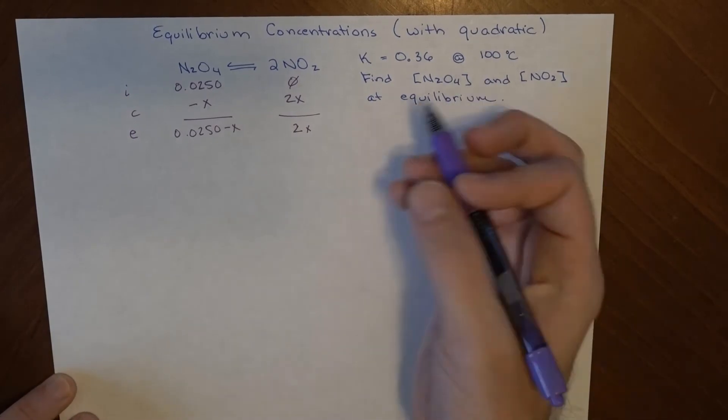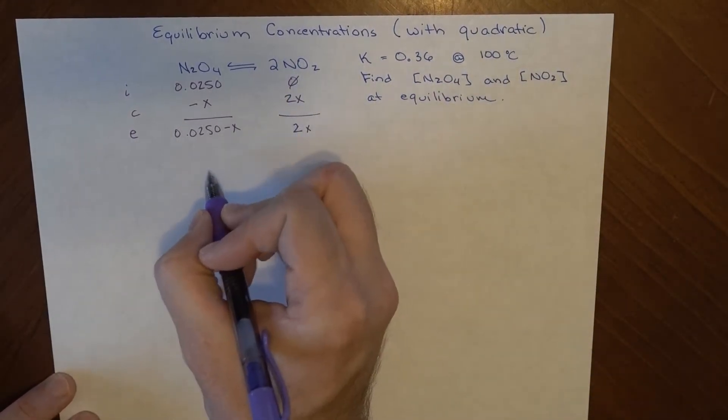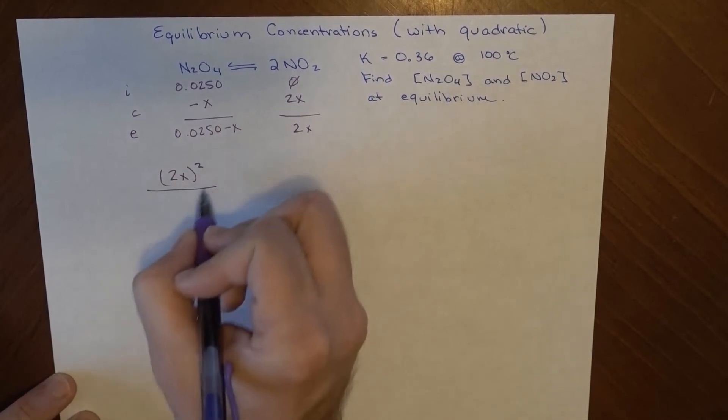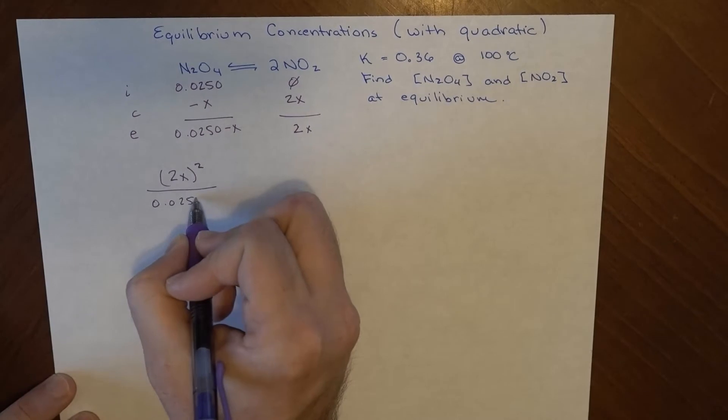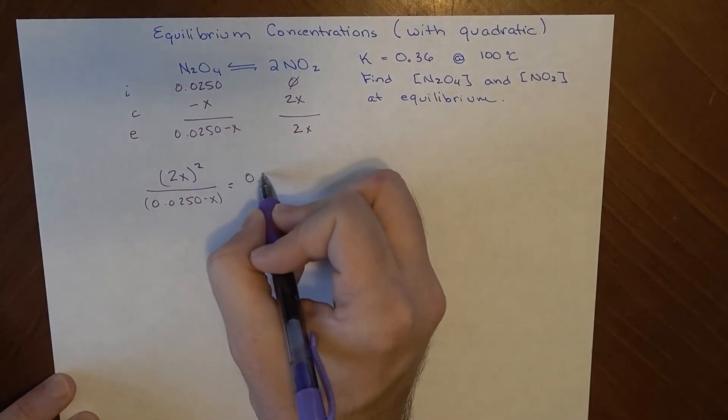So what I do is I'm going to plug this in and get my K constant. So it's my products over reactants. So 2x squared over 0.0250 minus x, and that whole thing is equal to 0.36.